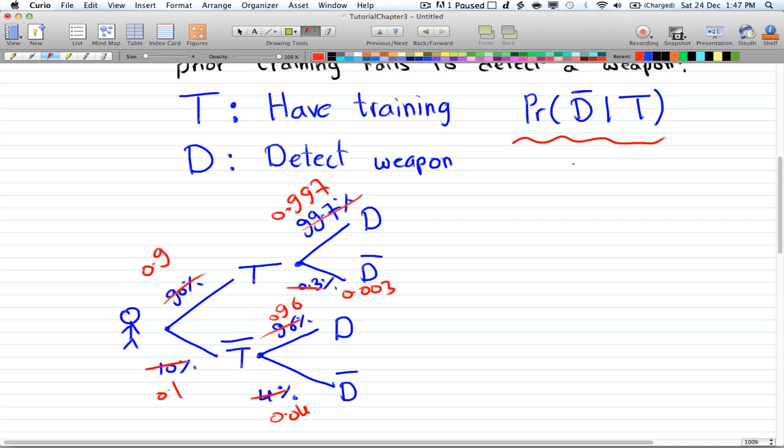So if you have two circles of people, so let's see, two circles, these people have training and these people do not have training. All right, so all of them fail to detect a weapon. So let's just say everyone here fails to detect a weapon.